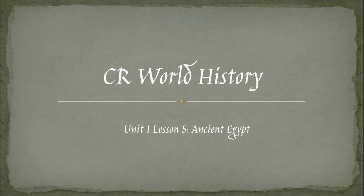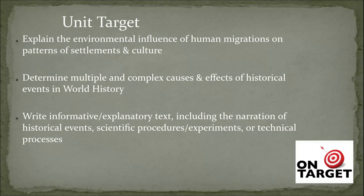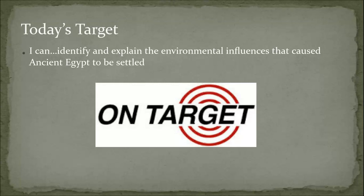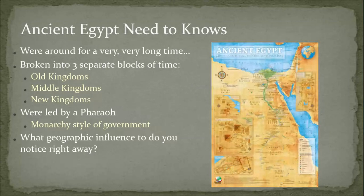This is the last lesson of this first unit for credit recovery world history. We're going to be looking at ancient Egypt. It's worth noting that this civilization has been around a lot longer than the other ones we've talked about. As always, we're looking for causes and effects that make up world history — specifically what early man used from the environment to settle in one area, but more focused on ancient Egypt.